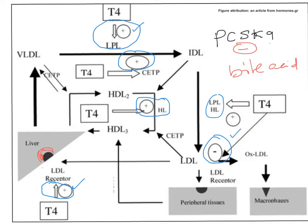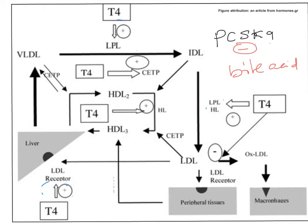Now let's see what happens in hypothyroidism and hyperthyroidism. In hypothyroidism there are decreased levels of T3 and T4. All the positive effects of T3/T4 are diminished, so LPL activity decreases. Because of this, VLDL accumulates and chylomicron levels also increase, since LPL is not clearing them effectively.